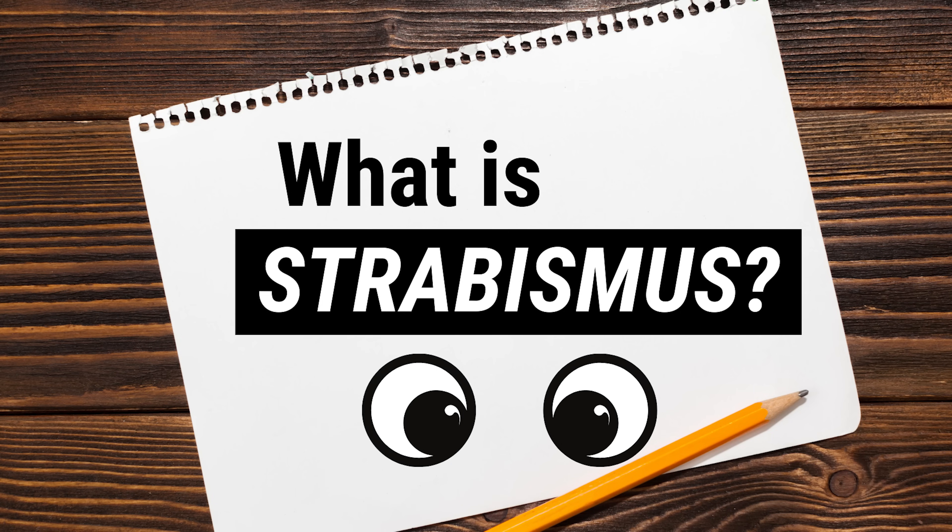Do you have a friend or family member who is cross-eyed? In eye care, we call that having strabismus, and it can cause a lot of problems with our eyesight and vision. In this video, we're going to break down what strabismus is so that you know what's going on and what you can do about it.